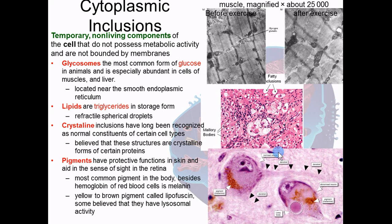Next are cytoplasmic inclusions. Technically they're not organelles — they're temporary structures, not alive. The cell holds them like little storage trunks. Glycosomes are sugary bodies — little packages of glucose found primarily in muscle and liver cells. In a muscle example, you can see granules of glucose, but after exercising the muscle, most of those granules are gone because with exercise you burn up those sugars. These temporary storage units are called inclusions — included in the cytosol but not a technical organelle.